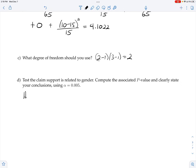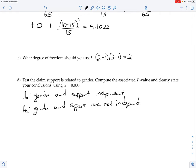The null hypothesis is that gender and support are independent, or you could say they are not related. The alternative hypothesis is that gender and support are not independent or they are related. However you want to word that is fine.